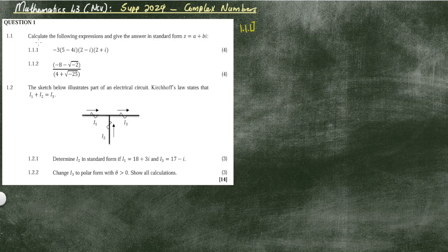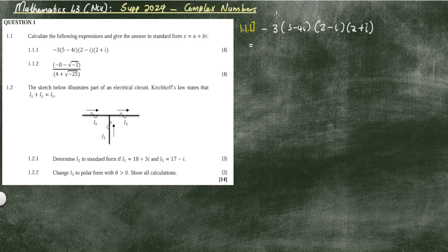We are told to calculate the following expression and give the answer in standard form. We need to simplify it by FOILing — we have (minus 3)(5 minus 4i)(2 minus i)(2 plus i), so three brackets to multiply. I would take the last two brackets and multiply them first.